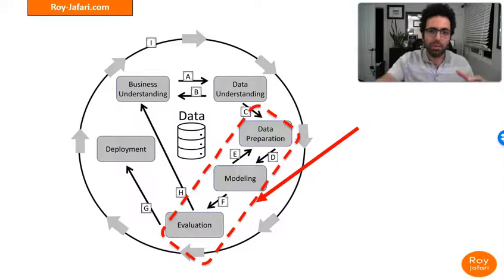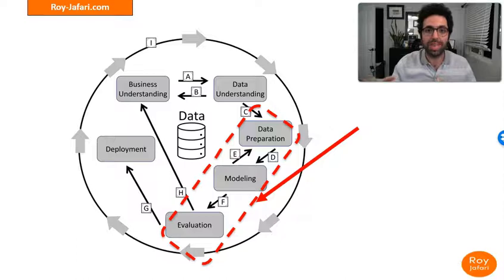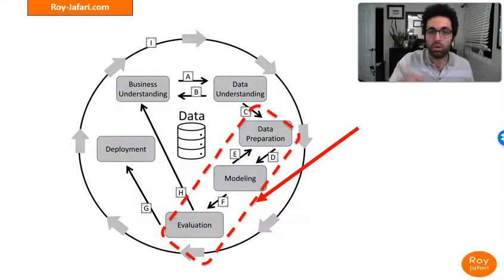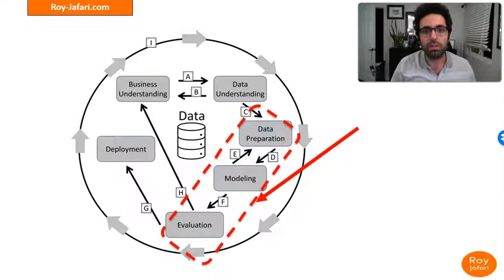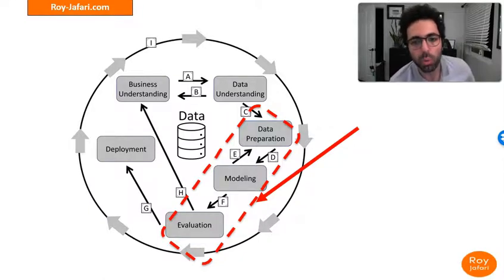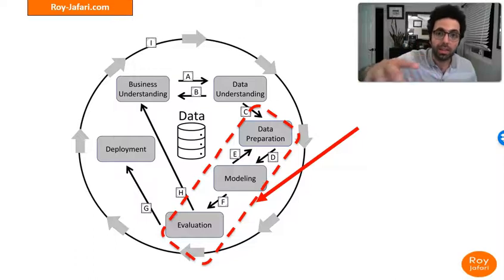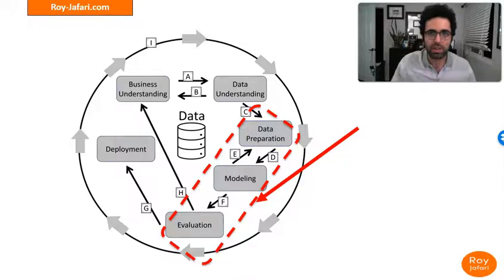From data preparation, modeling, and evaluation, there is a specific interaction. This whole mechanism from data preparation through modeling to evaluation has to be looked at together. When we prepare the data, we want to give the model the best chance. And when we evaluate the model created from the prepared data, that's when we understand if both the model and the data preparation were successful. We may have to go all the way to evaluation and then come back and rework data preparation.